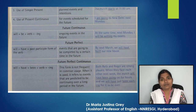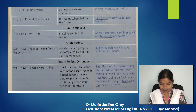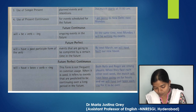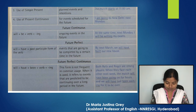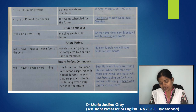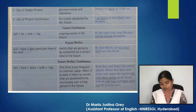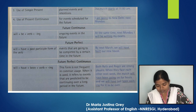Let's move on to future perfect. For this we need 'will' plus 'have' plus the past participle form of the verb. This is used to talk about events that are going to be completed by a certain time in the future. For example, 'By next March, we will have built our new house.' Finally, future perfect continuous requires 'will' plus 'have' plus 'been' plus verb plus '-ing.' This form is not frequent in common usage; it refers to events predicted to be continuing over a long period in the future. For example, 'When they face each other next week, the match will have been going on for hours and we will have just been waiting for it to be over.'